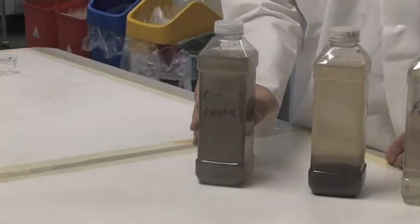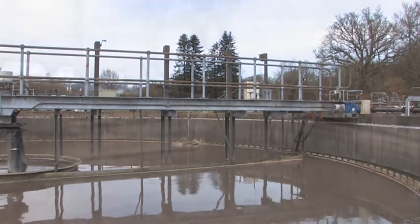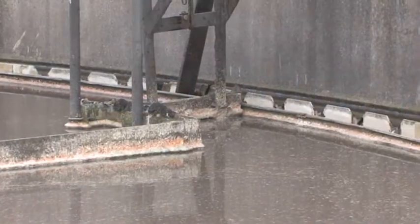After we've screened the crude sewage, removing the plastics and rubbers, we have to put the sewage into large settling tanks. The reason for that is we need to settle the solids.